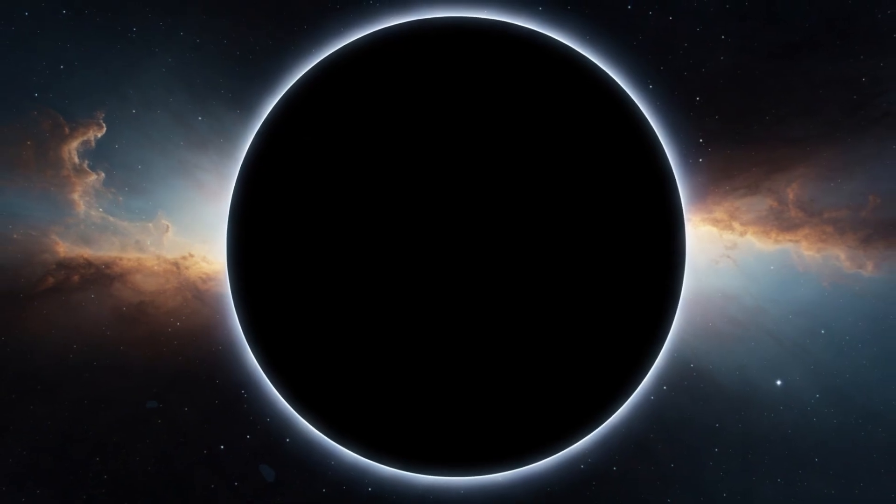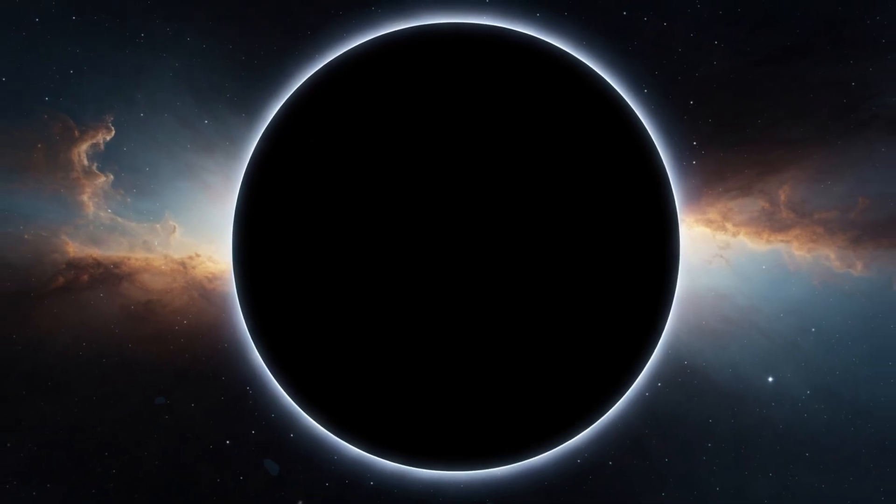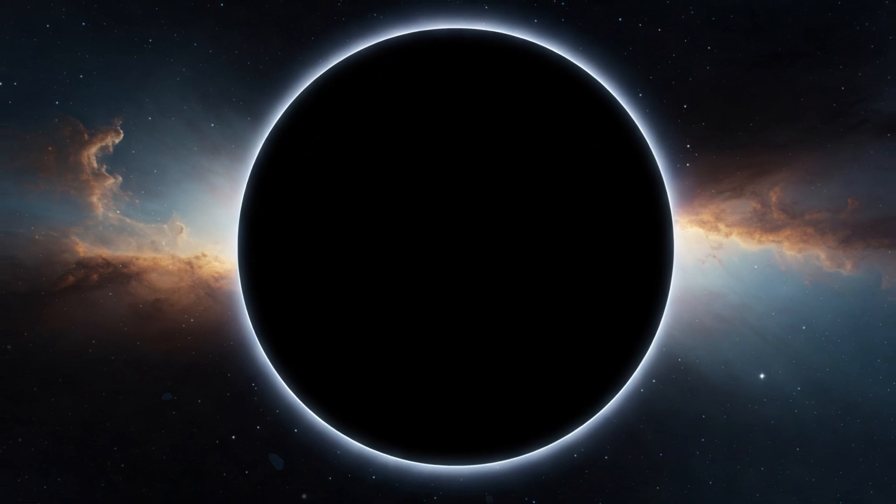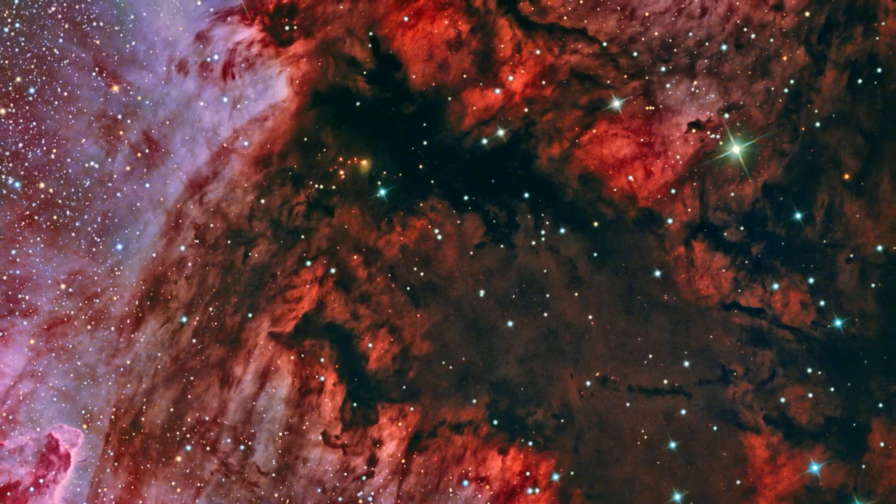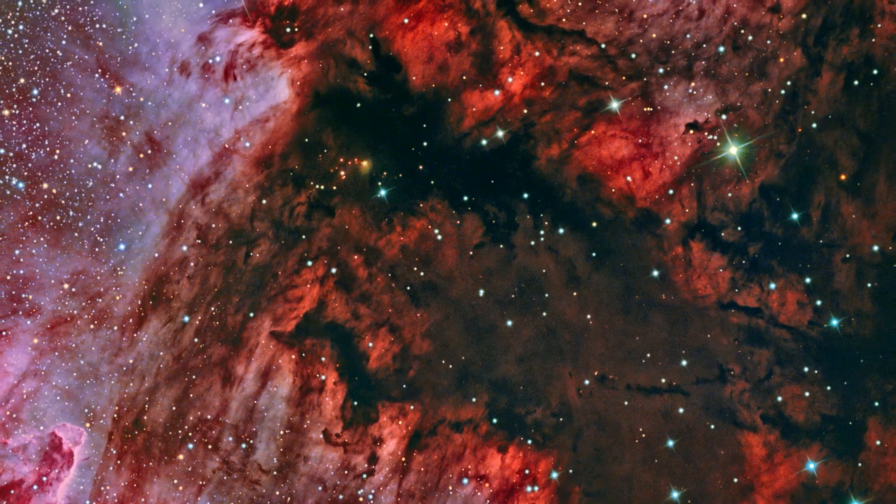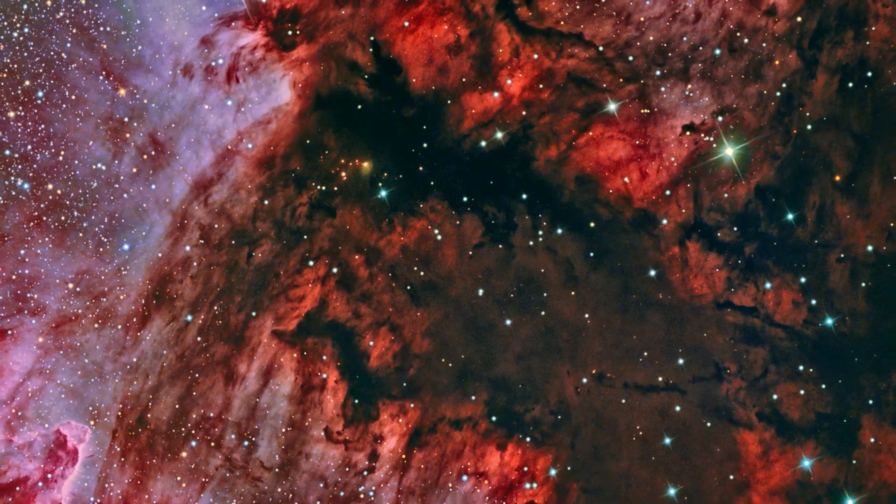A black dwarf is an invisible stellar body, devoid of light and heat. But there's a catch. The universe is not old enough for any white dwarf to have completely cooled. In other words, black dwarfs do not yet exist.